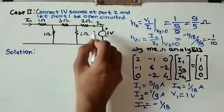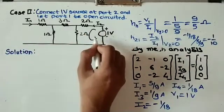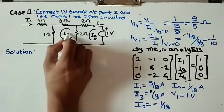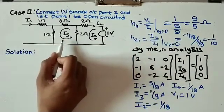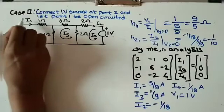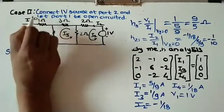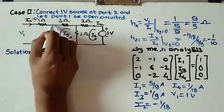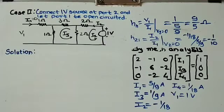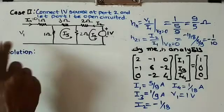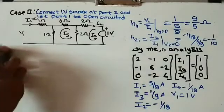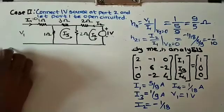We assume current i2 flowing at port 2 and a loop current i5 (since i3 and i4 are already used). Since port 1 is open-circuited, i1 equals 0. We can find the voltage v1 across the 1-ohm resistor. The formula for h12 is v1 over v2, so we need v1. We again apply mesh analysis.